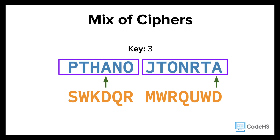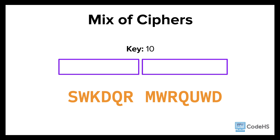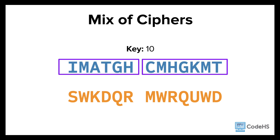It's still mumble jumble. And if someone tries to decipher it using the key 10, that's no help either. Using a mixture of keys, as well as a few set procedures, helps to hide this code.